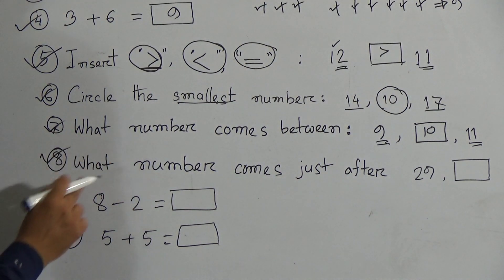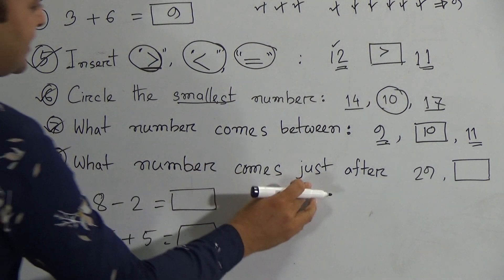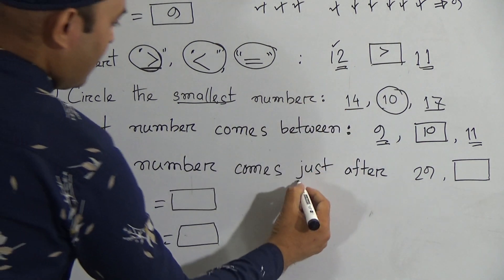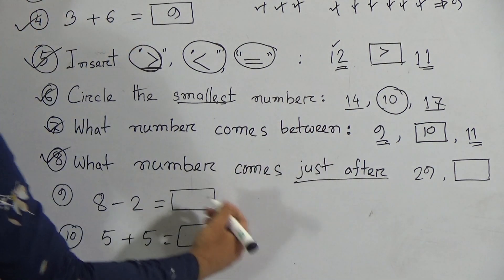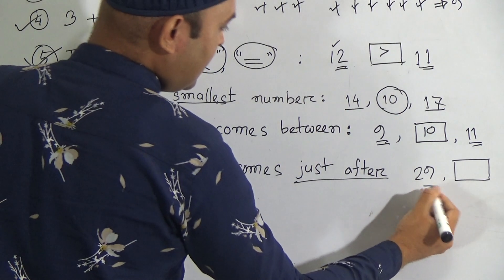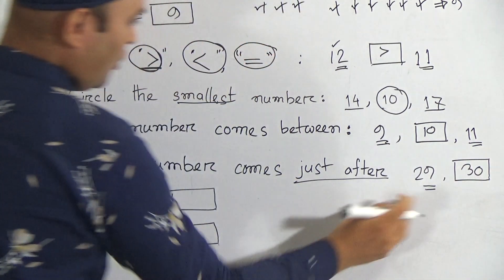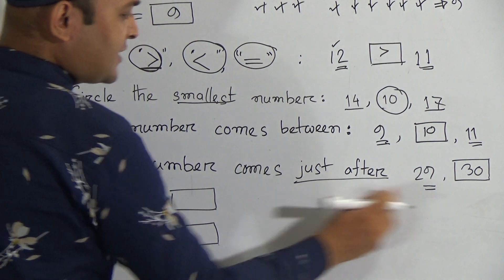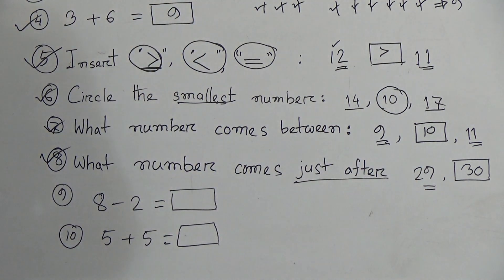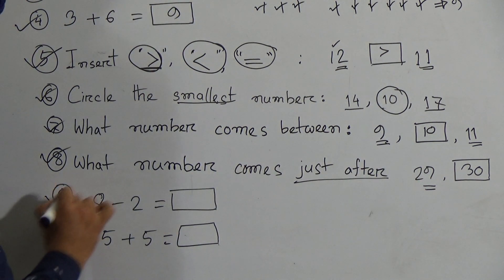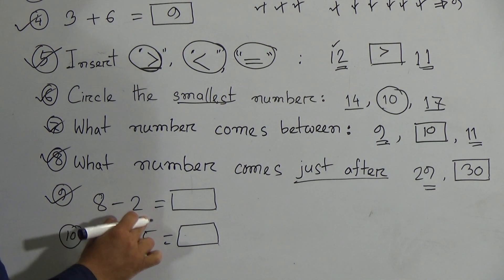Then number eight. What number comes just after? Just after means the next number, just after. That means 29. 29, the next one, it will be 30. So 30 comes just after 29. Now number nine: 8 minus 2.